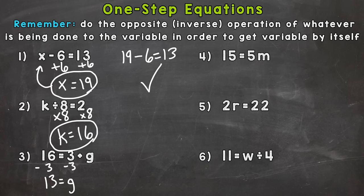So we get g equals 13. And I always like to rewrite with the variable first, g equals 13. And let's double check. Does 3 plus 13 equals 16? Yes. So we have the correct answer for the variable. Number 4.